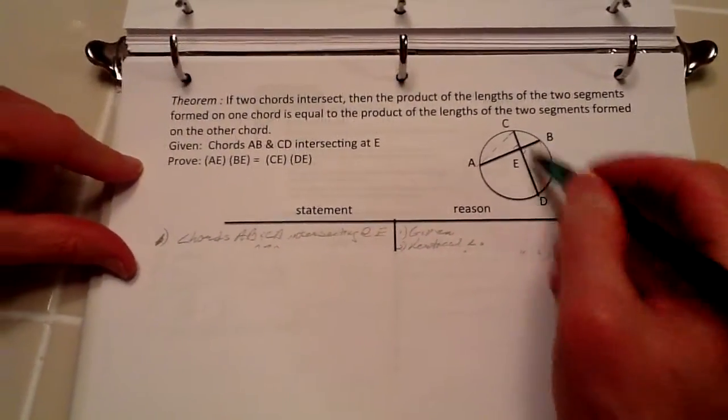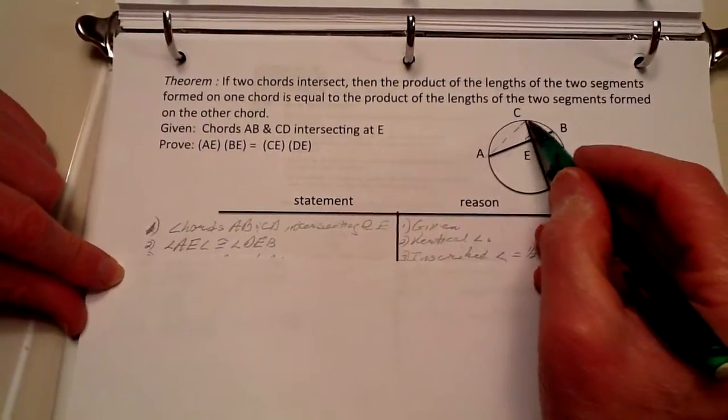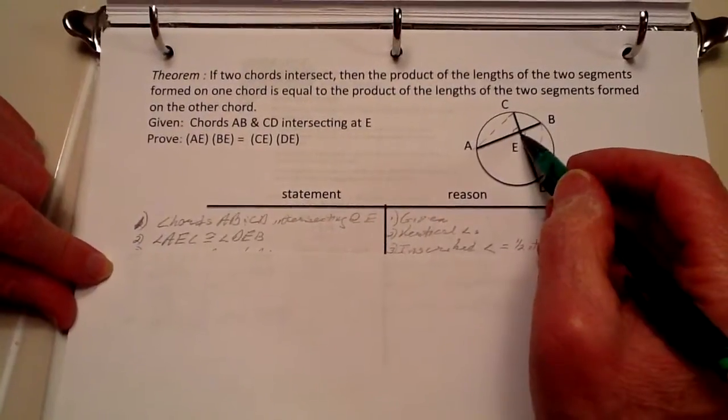First thing, we have our two chords intersect at E, that's the given. We know now that angle AEC is congruent to angle DEB because they're vertical angles, as you can see here.